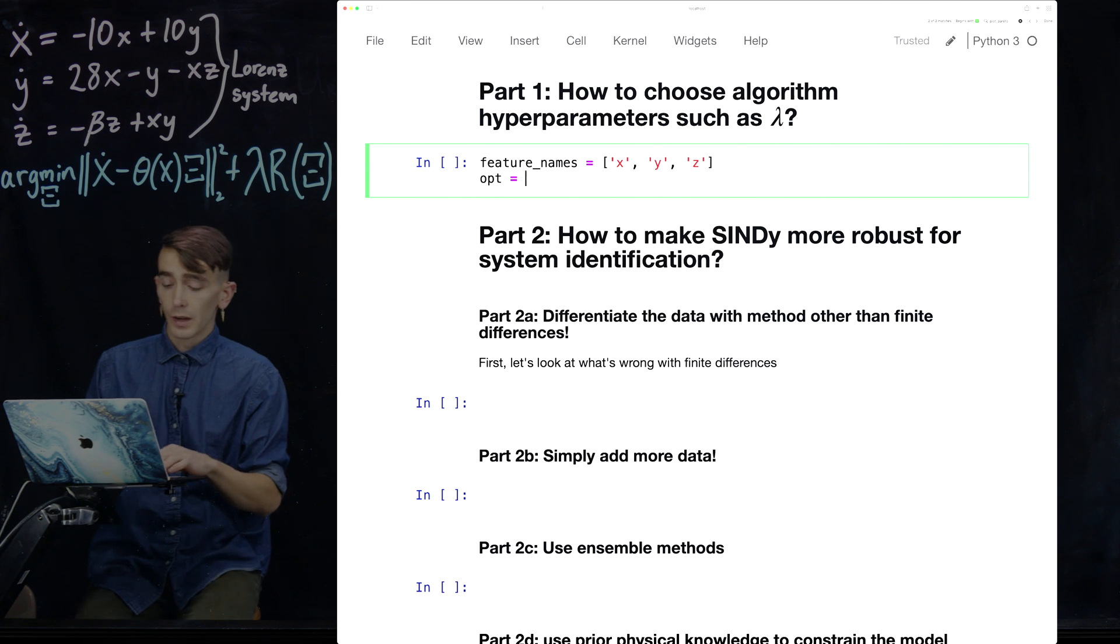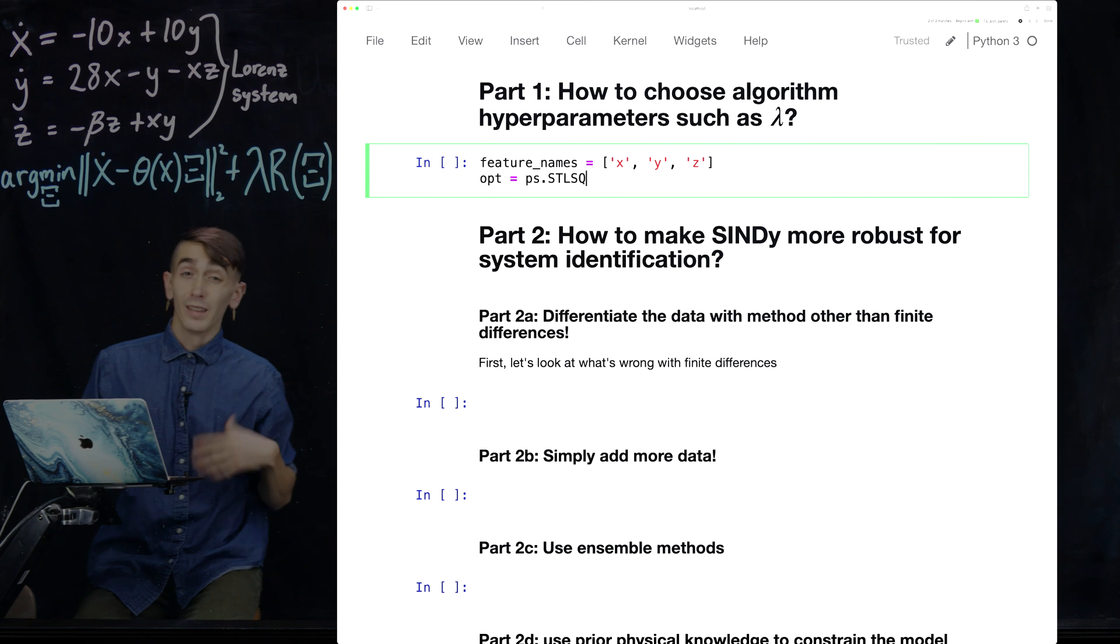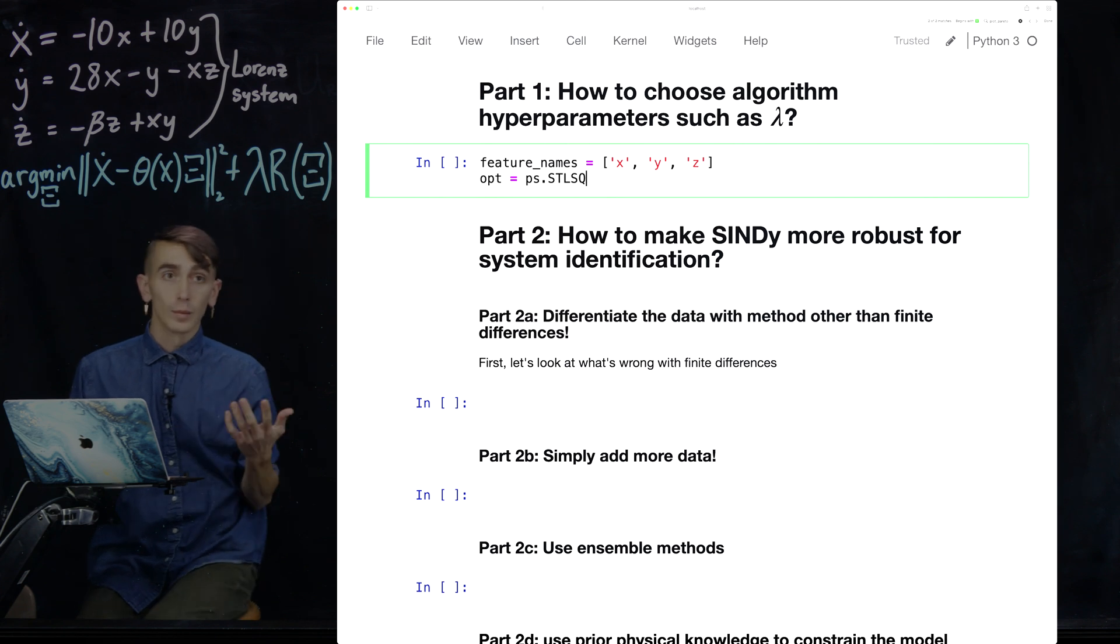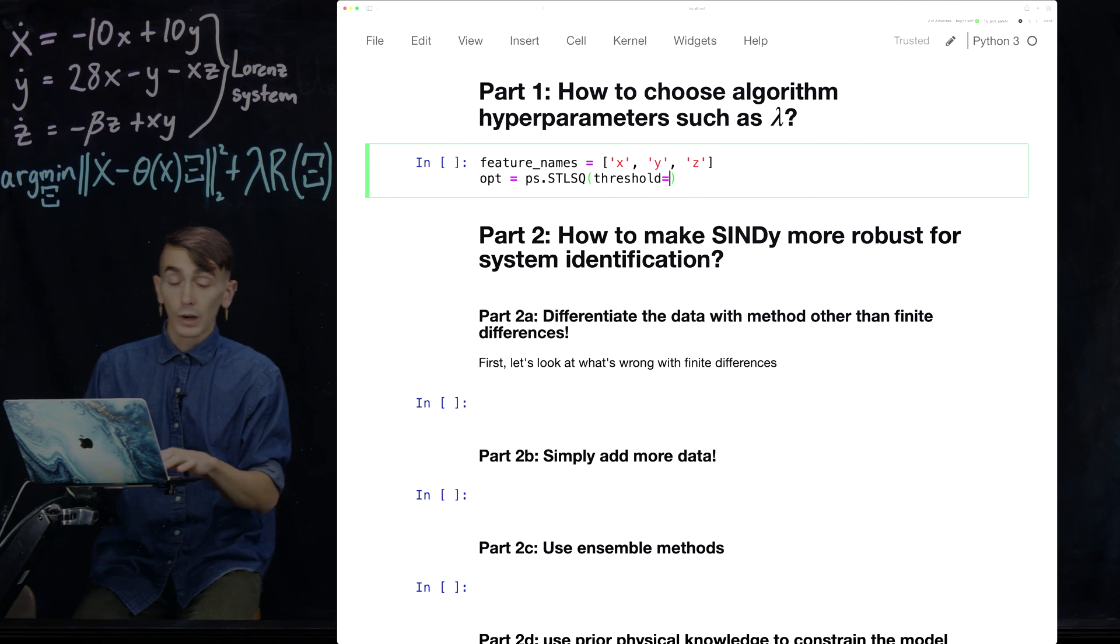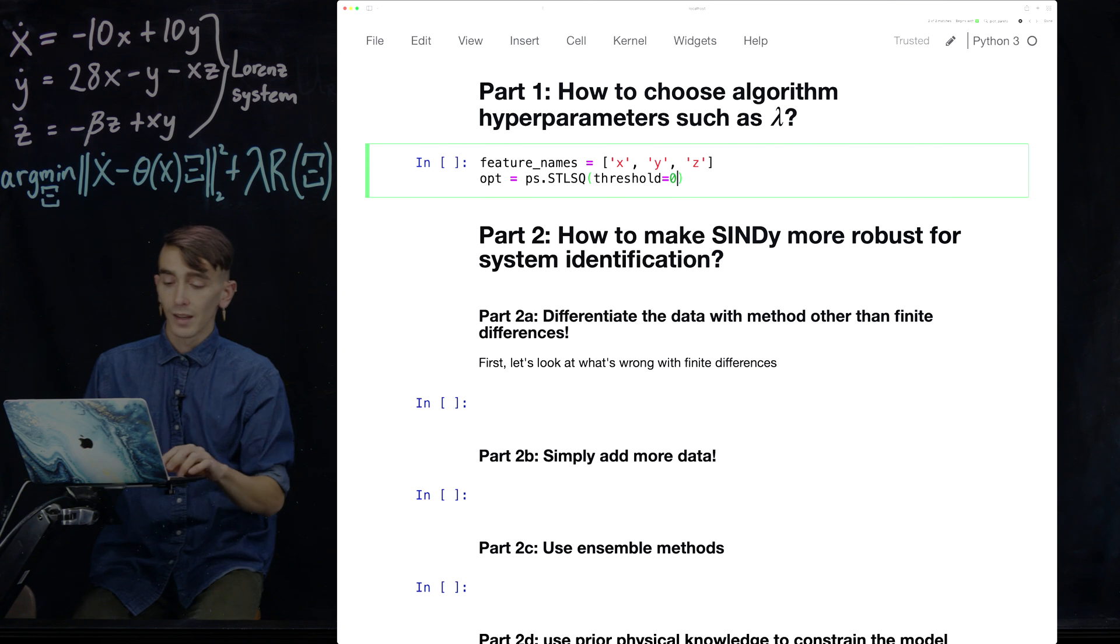I'm now just going to define a simple optimizer in the code. So I'm going to use this sequentially threshold least squares algorithm in order to solve this optimization problem. The details aren't super important. Basically, I'm just choosing an algorithm to solve the problem. And I'm going to choose a threshold, which is this lambda here. So I'm going to choose a lambda of 0.